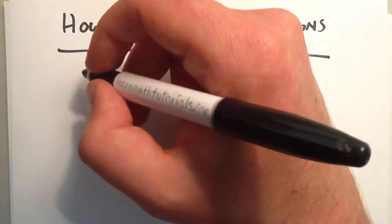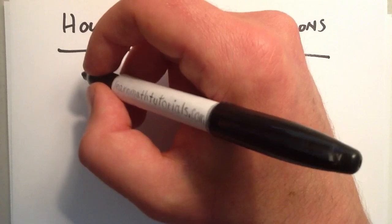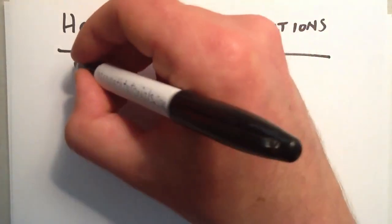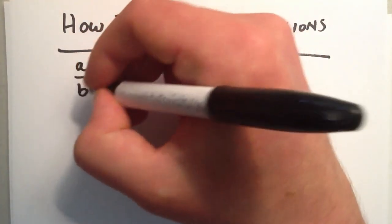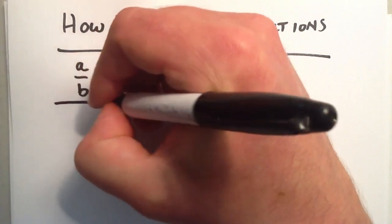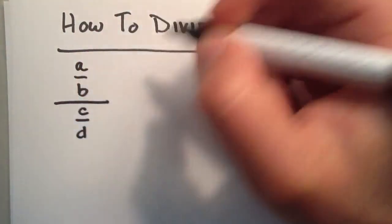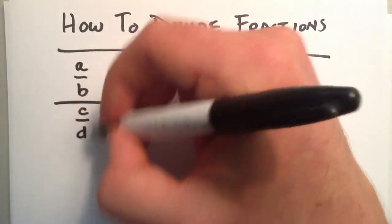So if we have four numbers a, b, c, and d, we can write a over b, that's one fraction, and we can divide that by c over d, another fraction. One fraction divided by another fraction.